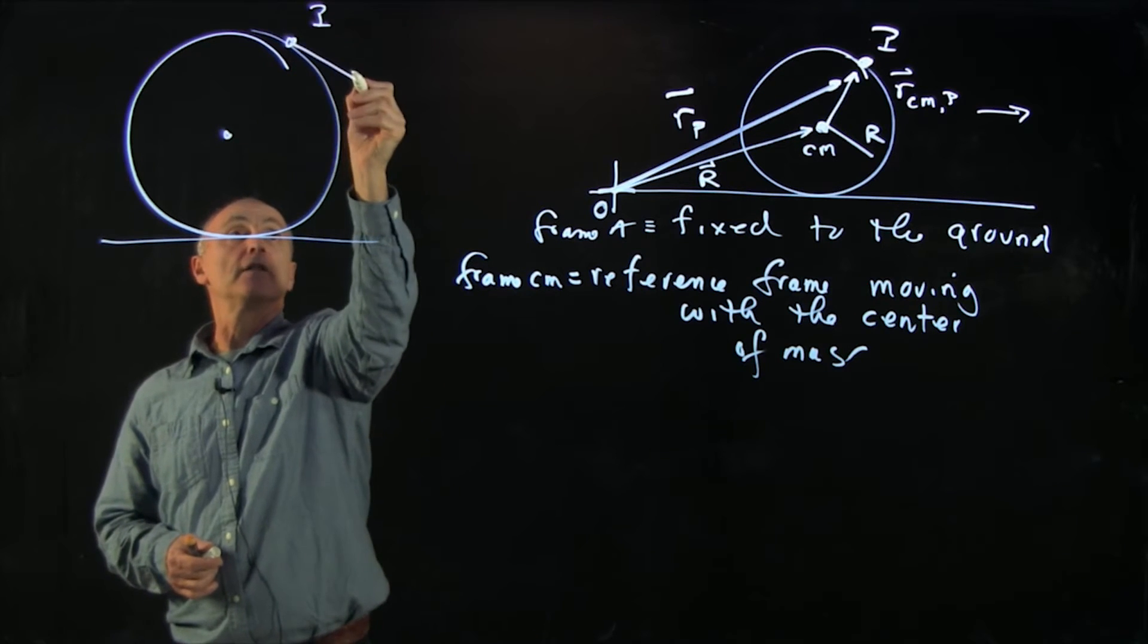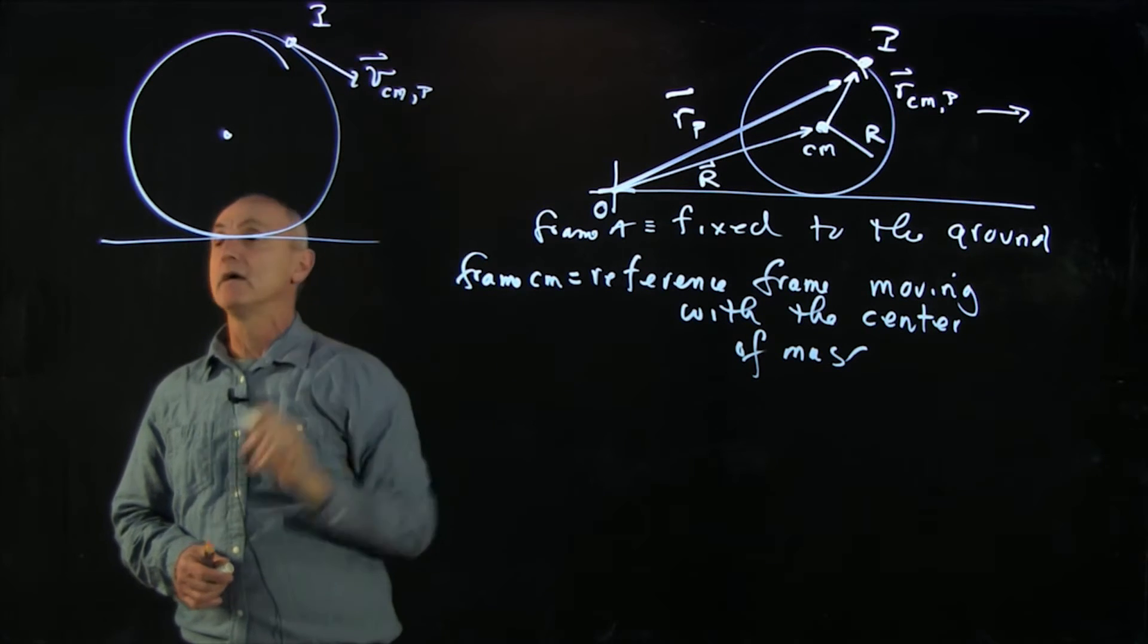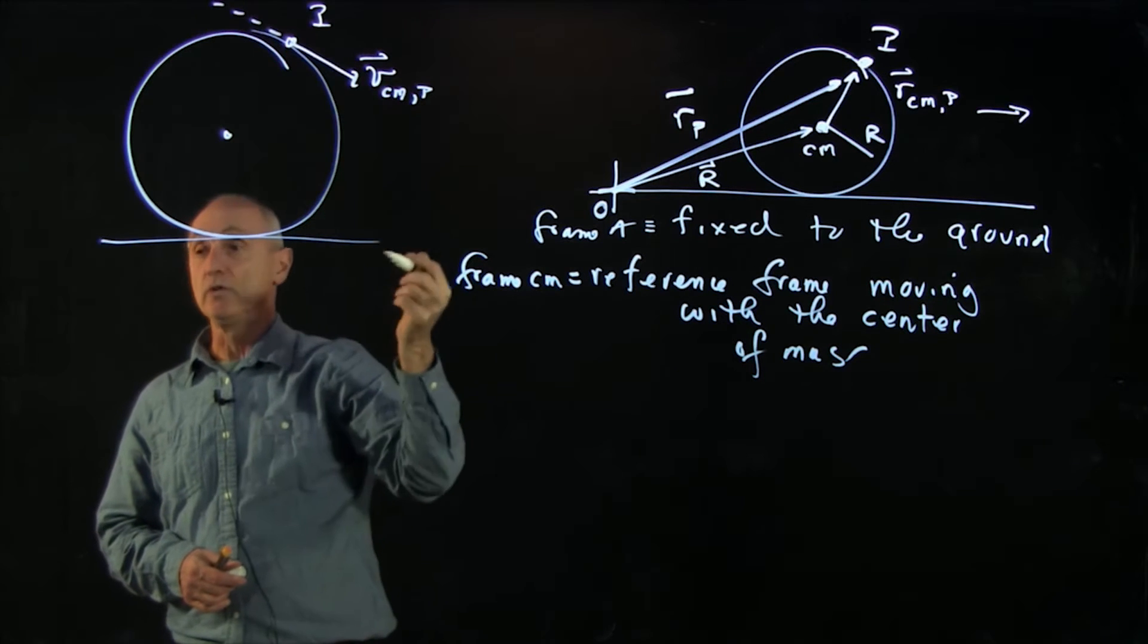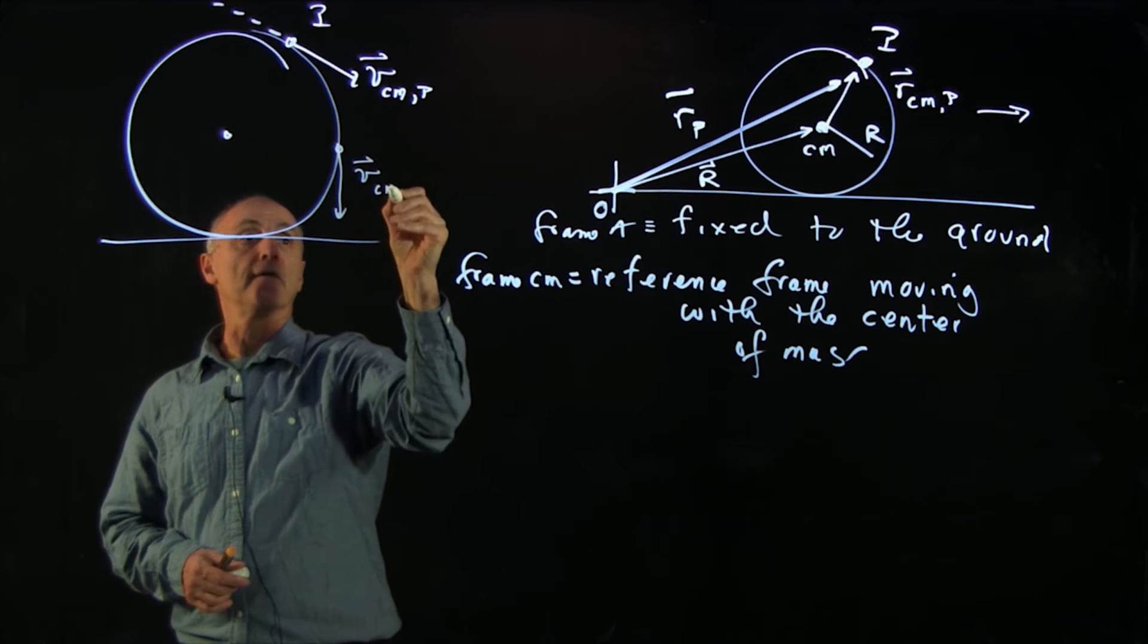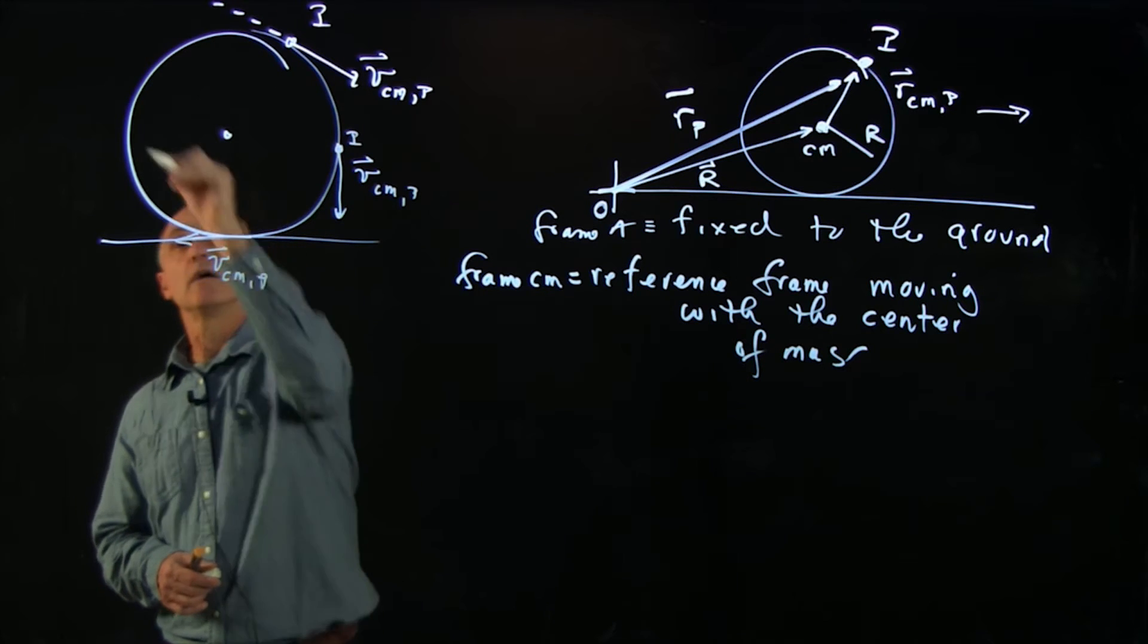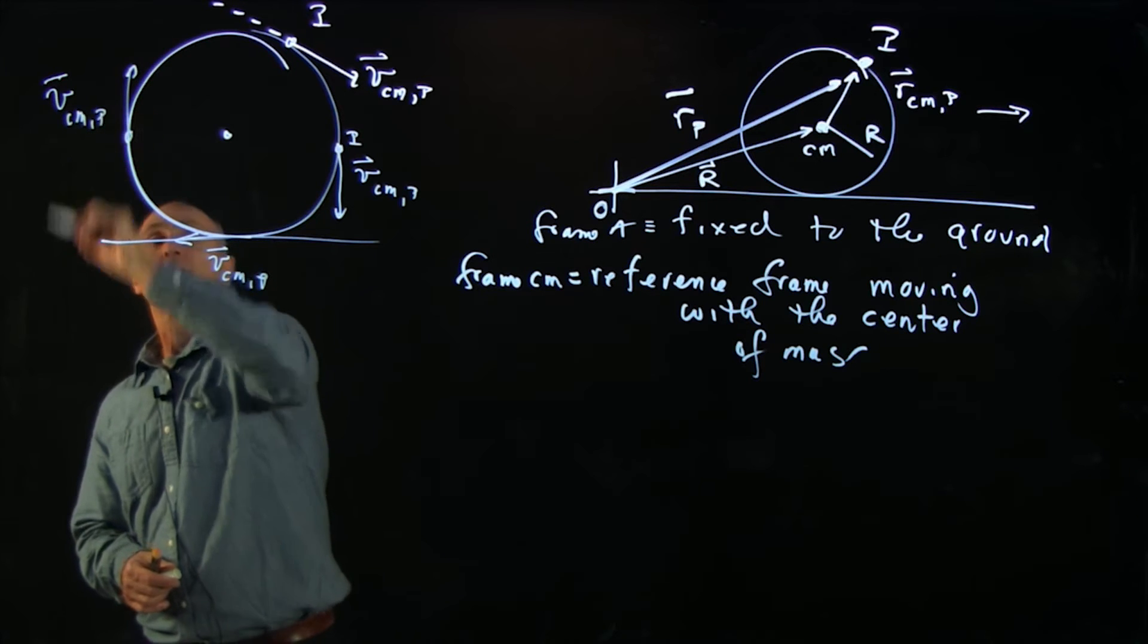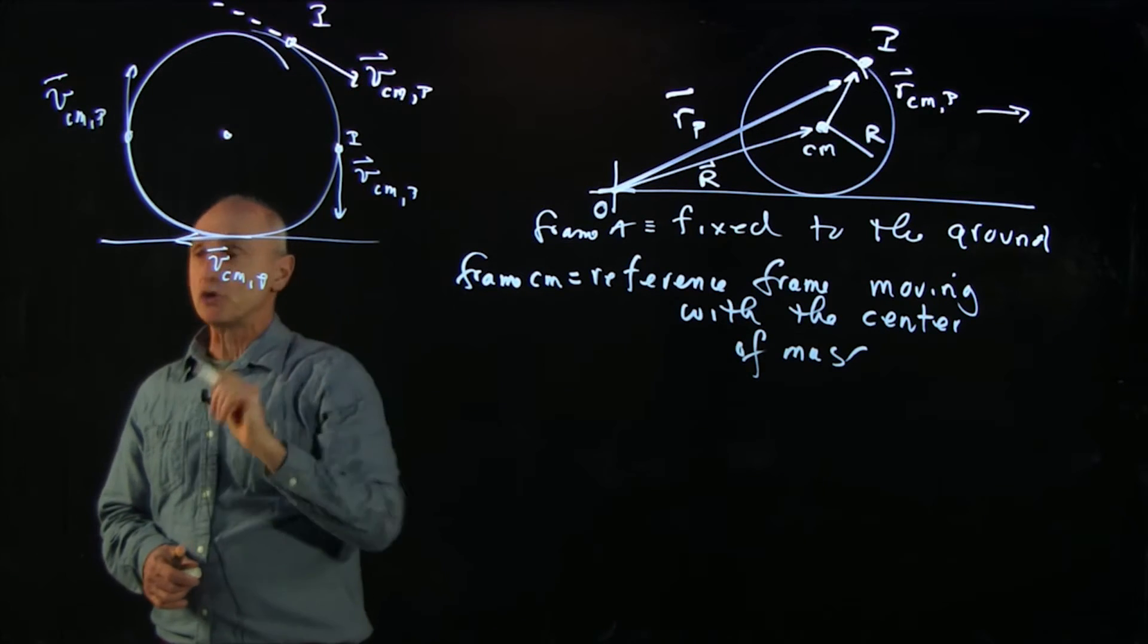So in that frame, the velocity of that point P in the center of mass frame is just tangent to the circle. And as the object moves around at a later time, the velocity is always tangential. And in this reference frame, it's just pure circular motion.